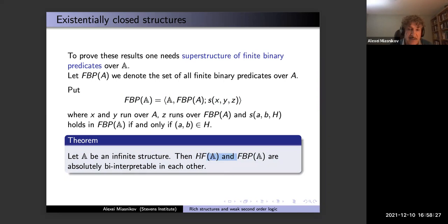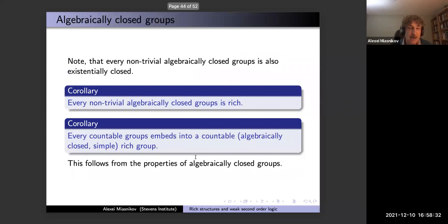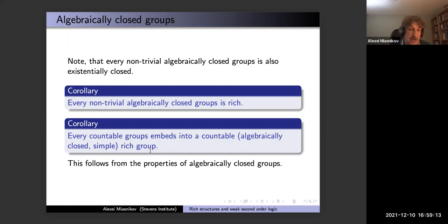The implication for groups: it is known that non-trivial algebraically closed groups are also existentially closed — algebraically closed means all equations are solvable, existentially closed means all existential formulas extend. They turn out to be the same. So every algebraically closed group is existentially closed and hence rich. It is also known that every countable group embeds into a countable algebraically closed group — which is simple and rich — so every countable group embeds into a rich group.